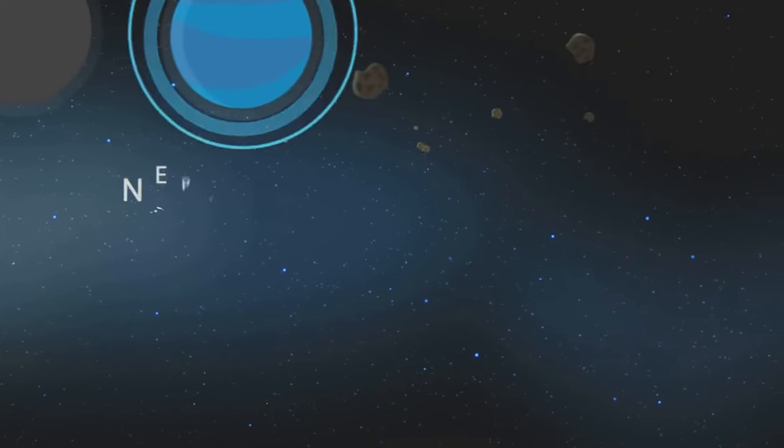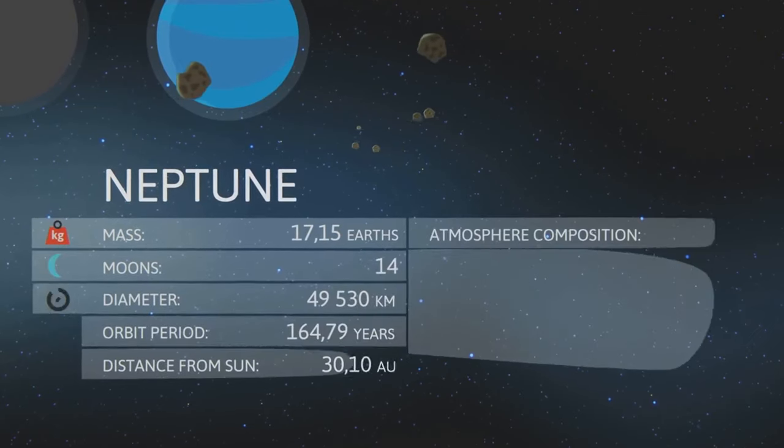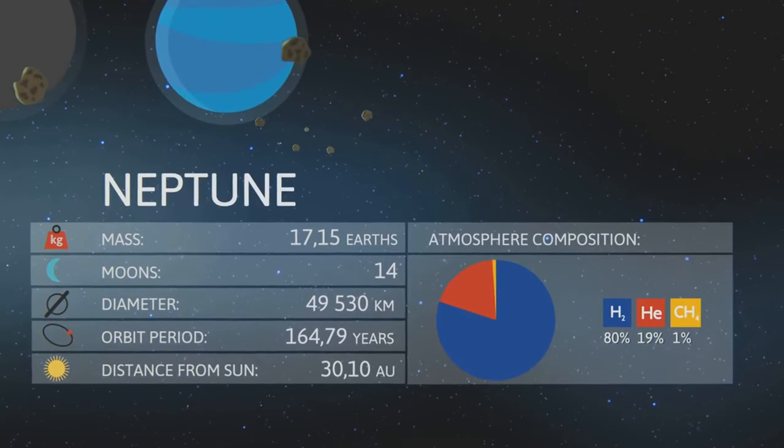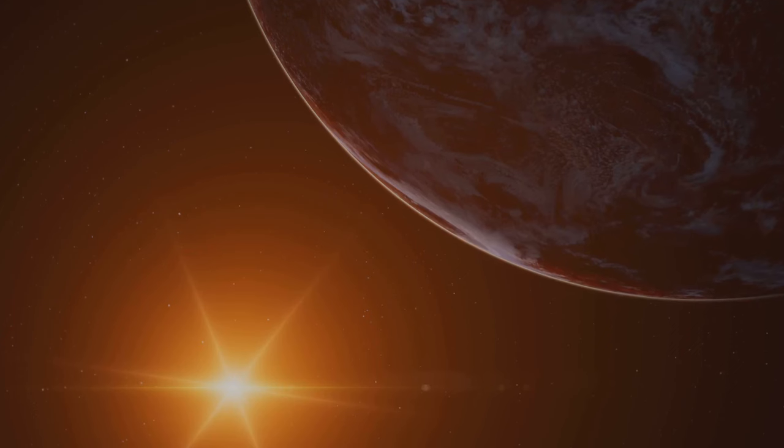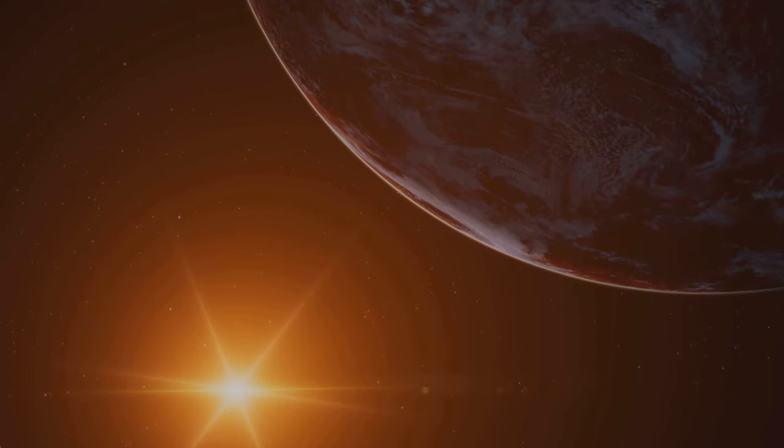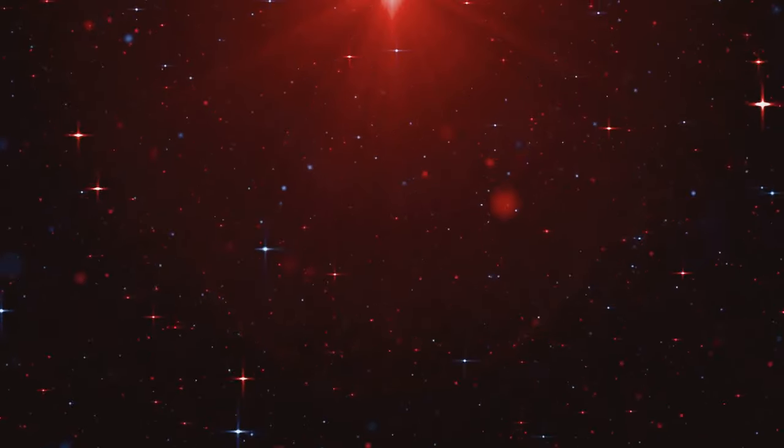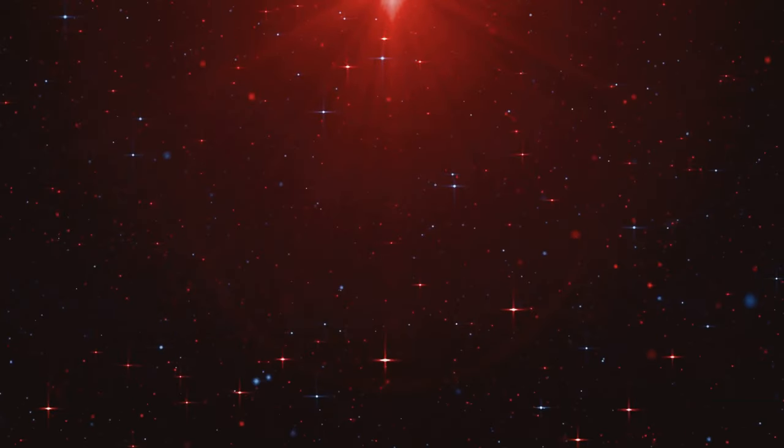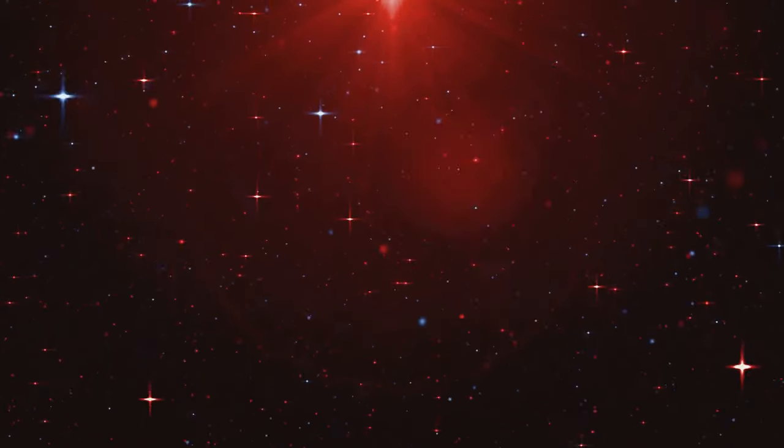One of the most striking differences between Earth and Gliese 581c is the type of star they orbit. While we bask in the warm glow of our yellow sun, Gliese 581c orbits a red dwarf star. These stars are much cooler and fainter than our sun, emitting light primarily in the red part of the spectrum.